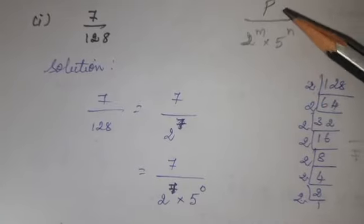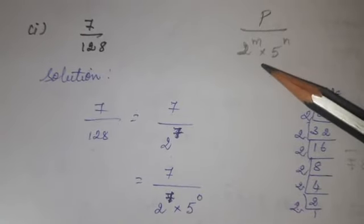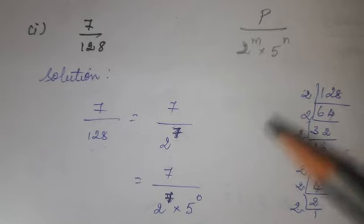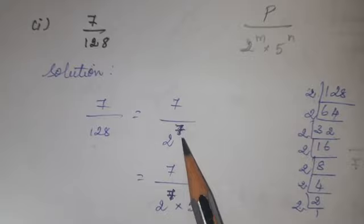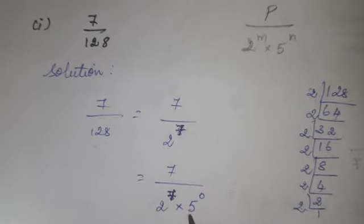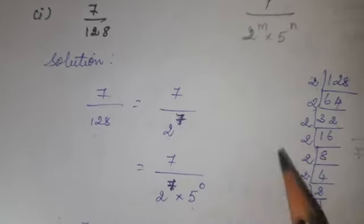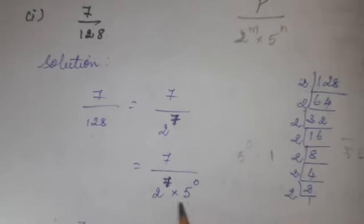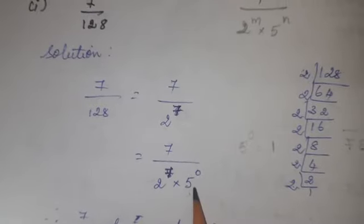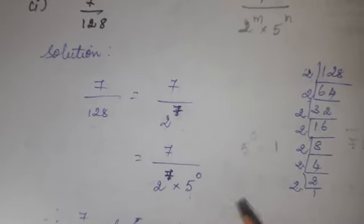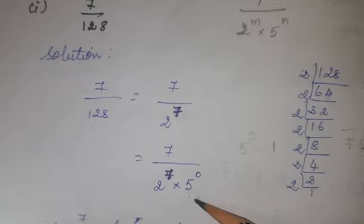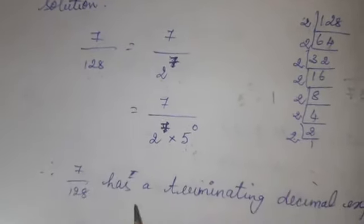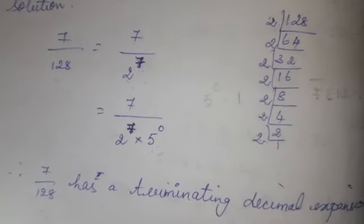The format is p divided by 2 power m into 5 power n. Here in the denominator, you have only 2 power; 5 power is missing. So we can write 5 power 0, and anything power 0 is 1. So 1 into 2 power 7 gives 2 power 7. You get that format in the denominator. Therefore, 7 divided by 128 has a terminating decimal expansion.